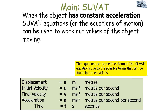Displacement is given the symbol s, initial velocity is given the symbol u, final velocity is given the symbol v, acceleration is given the symbol a, and time is given the symbol t. We can use these — s, u, v, a, and t — to construct equations to work out values of an object moving with constant acceleration.